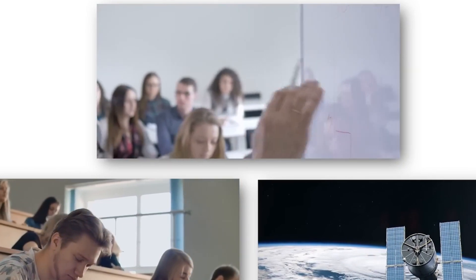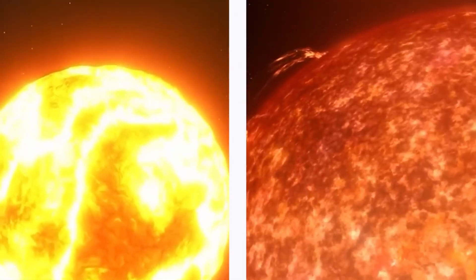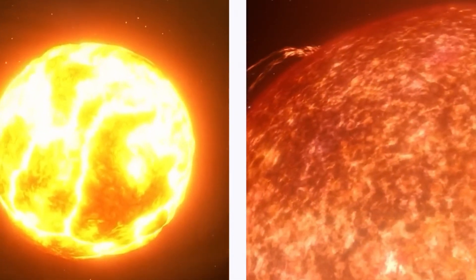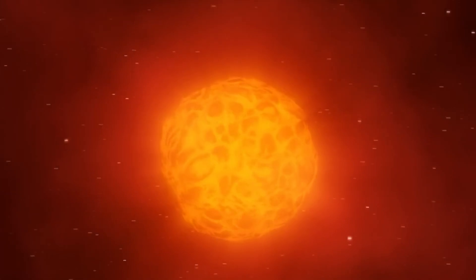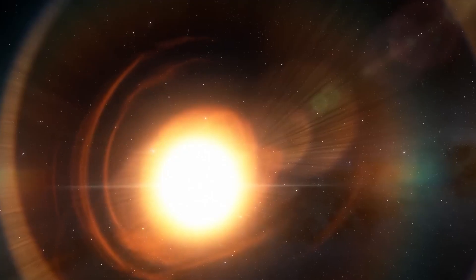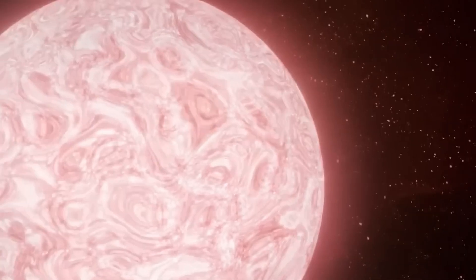Betelgeuse, being a semi-variable star, typically dims every 430 days and experiences dark spots, similar to our sun. However, recently, Betelgeuse has been pulsating from bright to dim twice as fast as before.